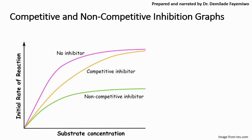These are the graphs that show you the different types of inhibition. You can see with no inhibitor on the purple graph, things seem to go on smoothly. With a competitive inhibitor, as you increase substrate concentration on the x-axis, the rate of reaction still increases because you are increasing substrate concentration. However, the initial rate of reaction is less than when there is no inhibitor. And when you have a non-competitive inhibitor, you can see that the substrate concentration increase does not necessarily affect how the graph plateaus with time.